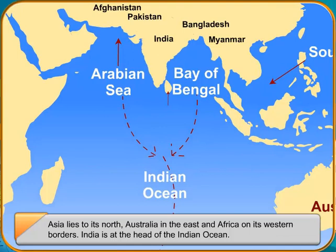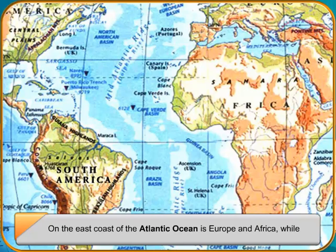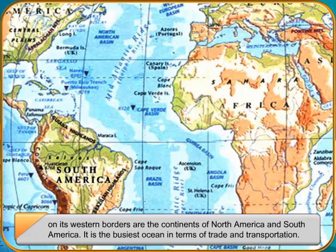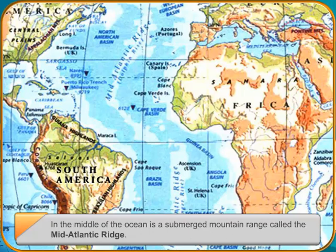Atlantic Ocean. On the east coast of the Atlantic Ocean is Europe and Africa, while on its western borders are the continents of North America and South America. It is the busiest ocean in terms of trade and transportation. In the middle of the ocean is a submerged mountain range called the Mid-Atlantic Ridge.